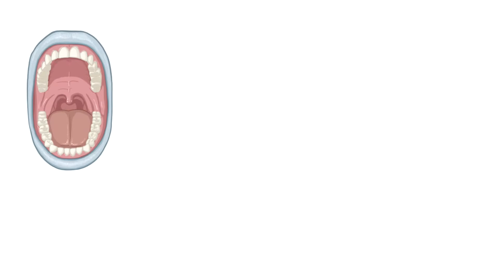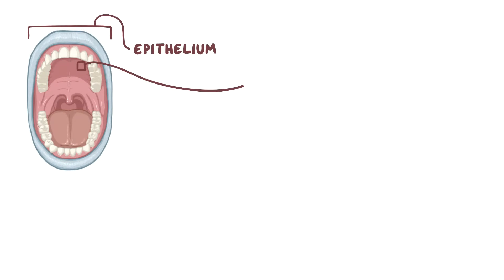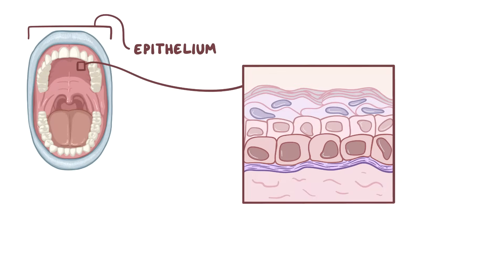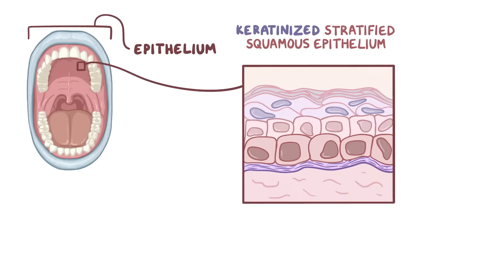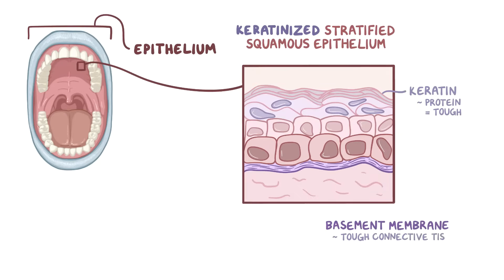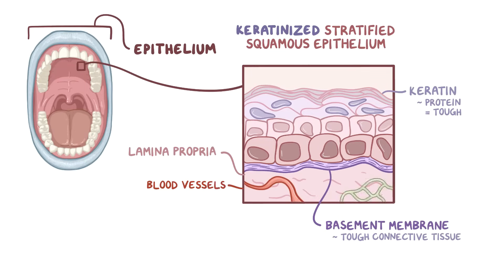The oral cavity and oropharynx are lined by epithelium, and there are a few different types. The first type is called keratinized stratified squamous epithelium. These epithelial cells produce keratin, a protein that makes the layer tough and protects against normal wear and tear from food and drinks. Beneath the epithelium there's another layer called the basement membrane, made of tough connective tissue, and below that there's the lamina propria, which has connective tissue that houses blood vessels, lymphatics, nerves, and immune cells.